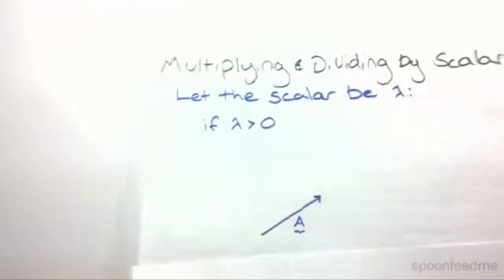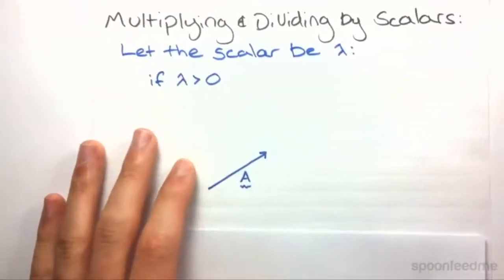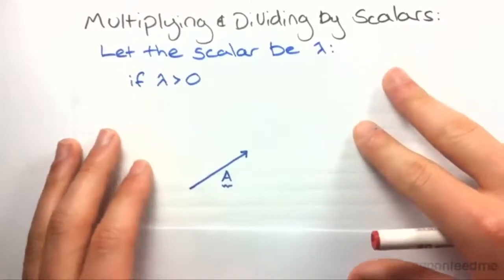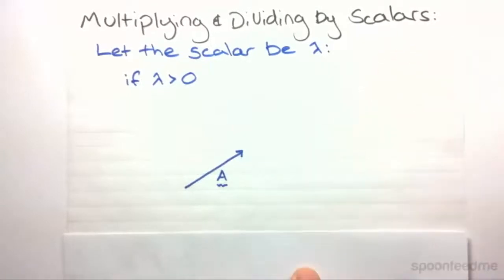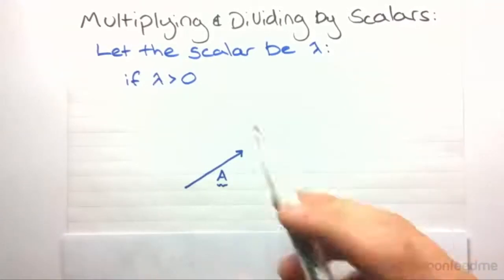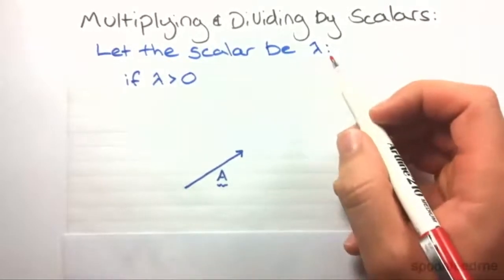So that's adding and subtracting graphical representations of vectors. Last thing we're going to look at is multiplying and dividing by scalars. Now scalars just have magnitudes. So an example here would be if you doubled your velocity or you halved your velocity. So that's multiplying by scalars in a simple term. Now we're going to let the scalar have a magnitude of lambda, just for this example.